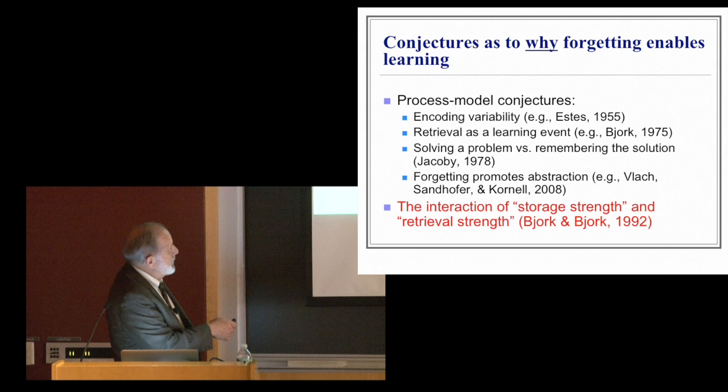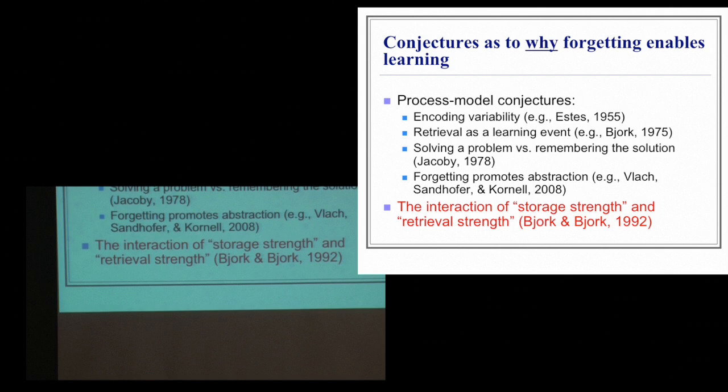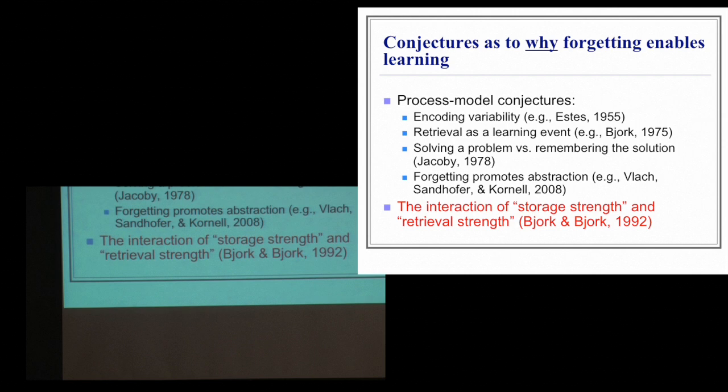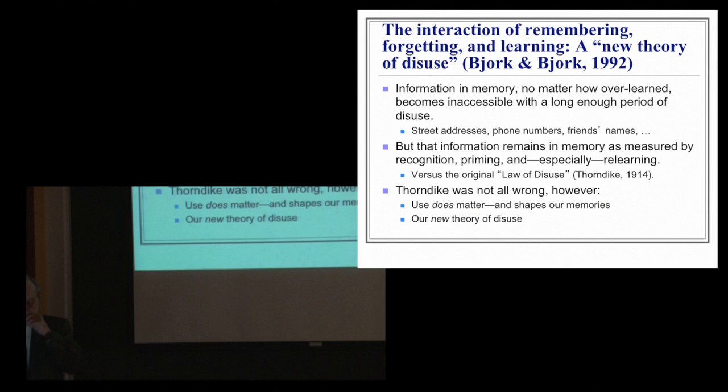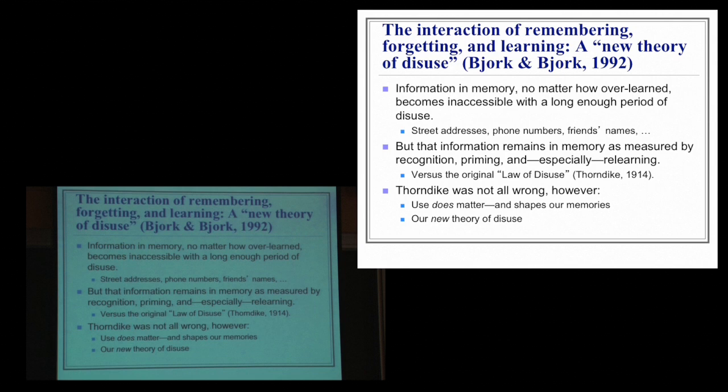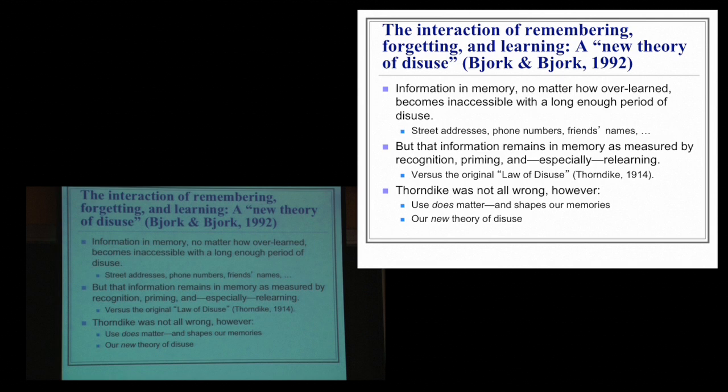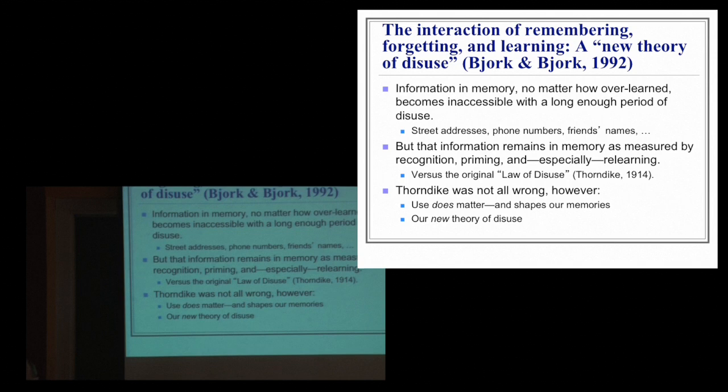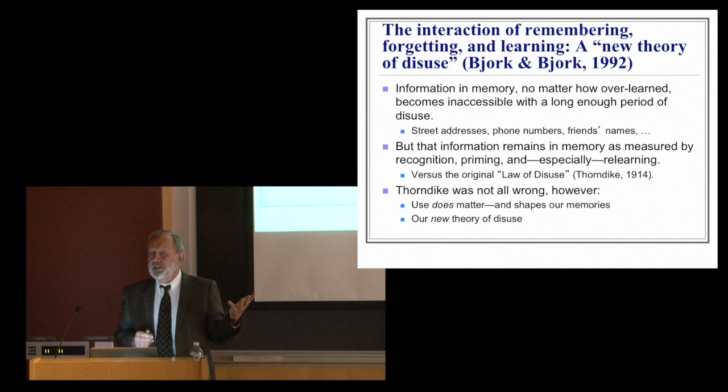What I'm going to focus on mostly today is this broader framework that doesn't commit to the processes so much, just makes some basic distinctions. And the most fundamental one is this distinction between what Elizabeth and I called storage strength and retrieval strength. Now the background for this is that information in memory, an interesting thing, is no matter how well learned it was, how automatic it was at some point in our life, a combination lock number, some high school friend's name, whatever, as learned as it could possibly be and as automatic as it could be, with a long enough period of disuse, it becomes inaccessible.